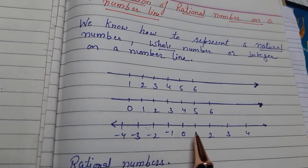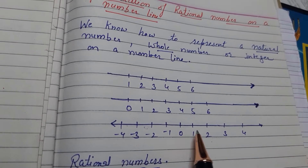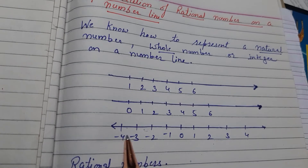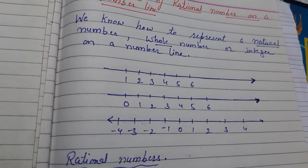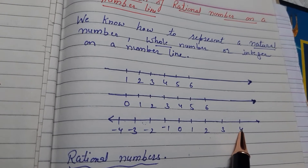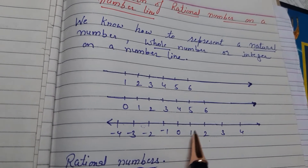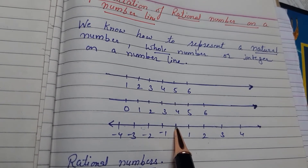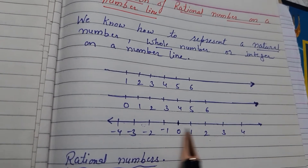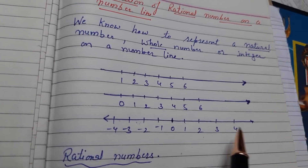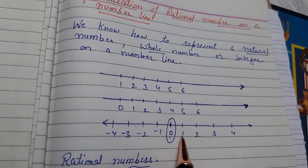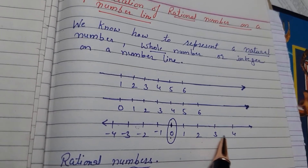Next is the integers. We know the integers include 0, positive numbers, and negative numbers. Negative numbers always lie on the left hand side of 0, and positive numbers always lie on the right hand side of 0. The integers can be represented on a number line with equal distance. For example, taking 0 here — for every corresponding positive integer, we have a negative integer also. For 1 we have minus 1, for 2 we have minus 2, for 3 we have minus 3, and for 4 we have minus 4. So except 0, we have a corresponding negative integer for every positive integer.